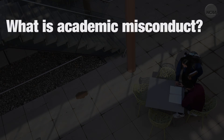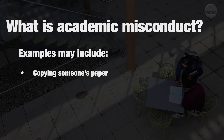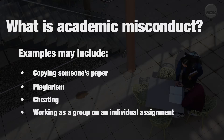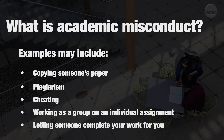It's important to review your institution's academic misconduct policy or ask your academic counselor. Examples may include copying someone's paper or copying straight from a source without giving them credit, otherwise known as plagiarism, cheating on a test or assignment, working as a group when you should do the assignment individually, or letting someone complete your work for you.